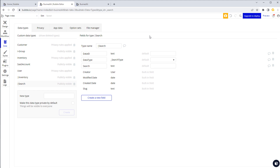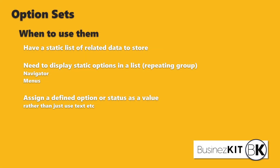When should you use option sets? Use them when you have a static list of related data that neither you nor the user needs to change within the app - such as types of searches or data types. Use them when displaying static options in a repeating group, like navigation and menus, where the list can be filtered but not changed. Also use them when you need to assign a defined option or status as a value, rather than free text, which is more efficient and less error-prone.